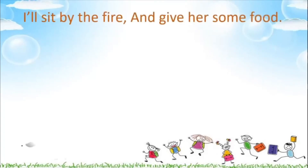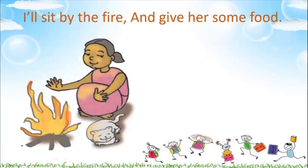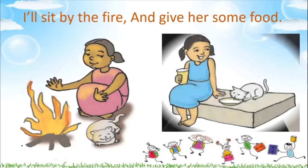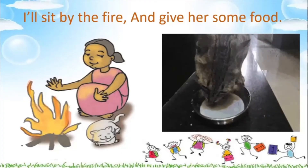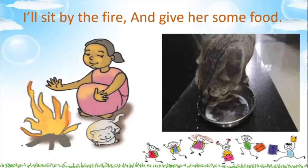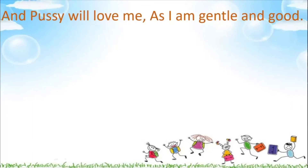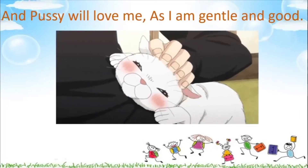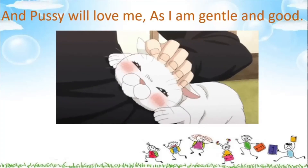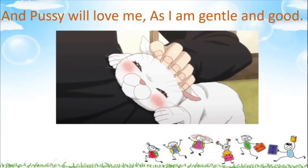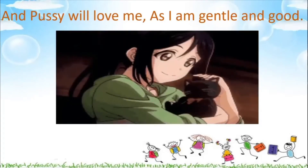'I'll sit by the fire and give her some food.' Whenever she is feeling cold, she will take her cat and sit by the fire and give her some food. What do cats like, children? Cats love to drink milk. She's saying: when I'm eating and drinking something, I will give my cat also some food because the cat also gets hungry. Then she says: 'And pussy will love me as I'm gentle and good.' My pussy cat will love me because I'm very gentle and good to her, so the pussy cat will also be good to me.